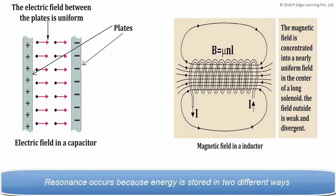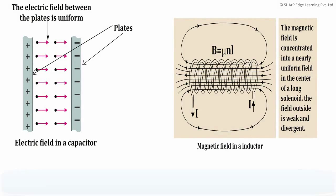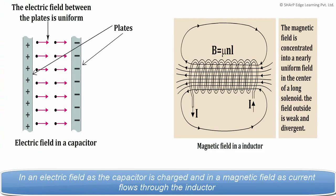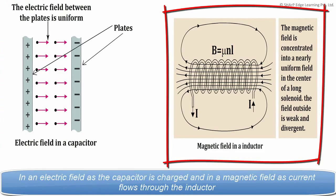Resonance occurs because energy is stored in two different ways: in an electric field as the capacitor is charged, and in a magnetic field as current flows through the inductor.